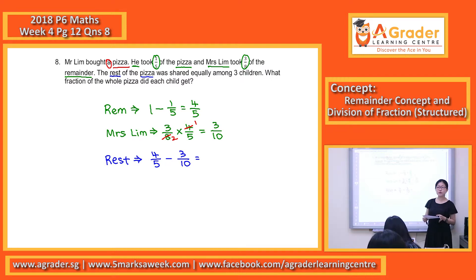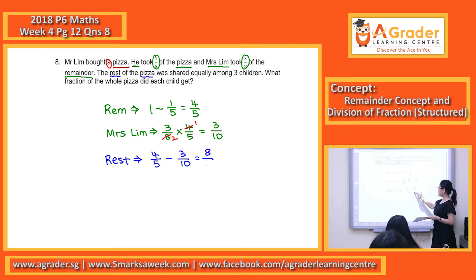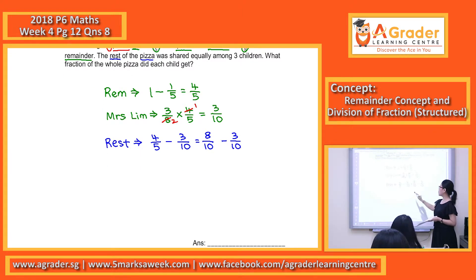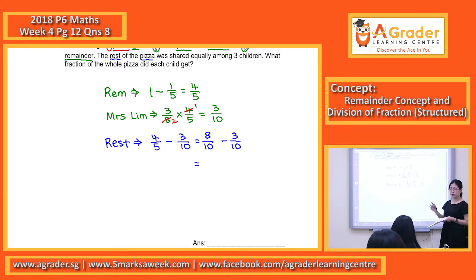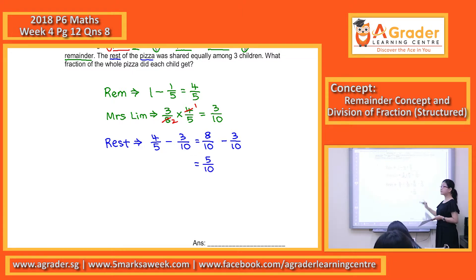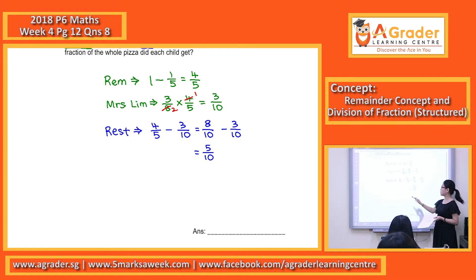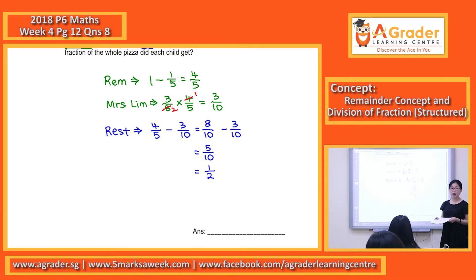Subtraction of fractions — please remember, denominators must be the same. So we find the equivalent of eight out of ten, and minus three out of ten. Once the denominators are the same, you subtract only the numerators, which gives five out of ten, with the denominator the same. If you simplify, it will be one out of two — one half.